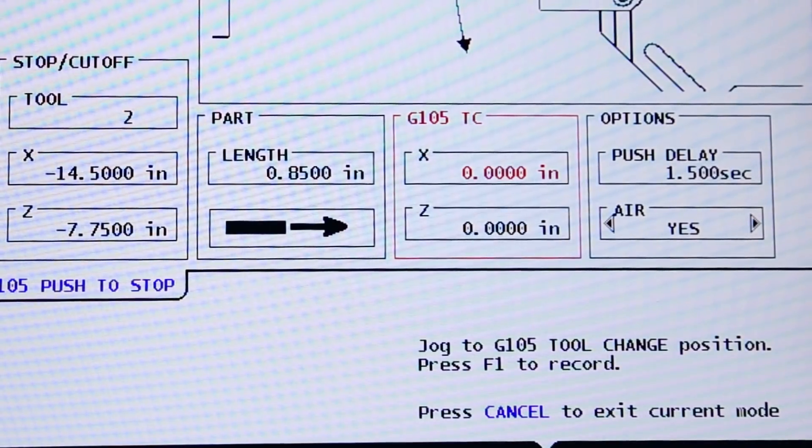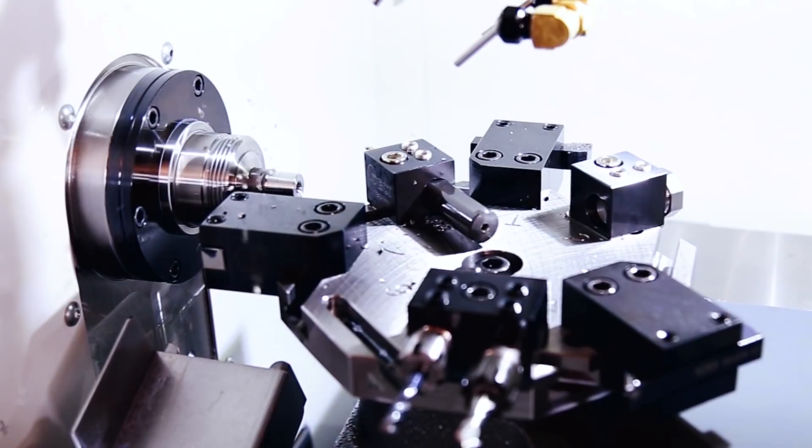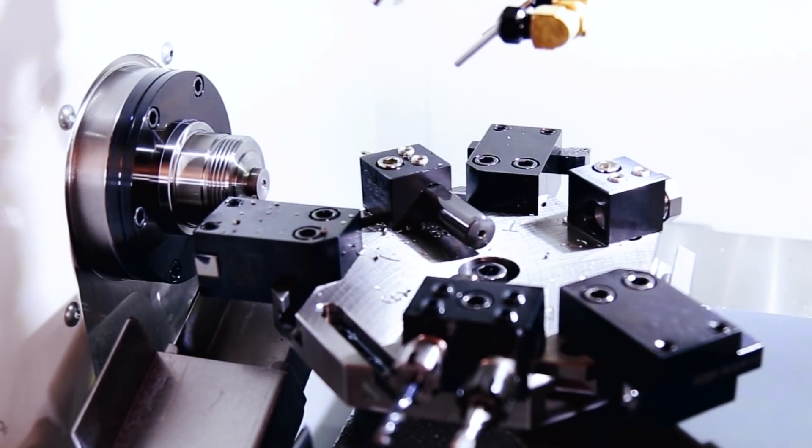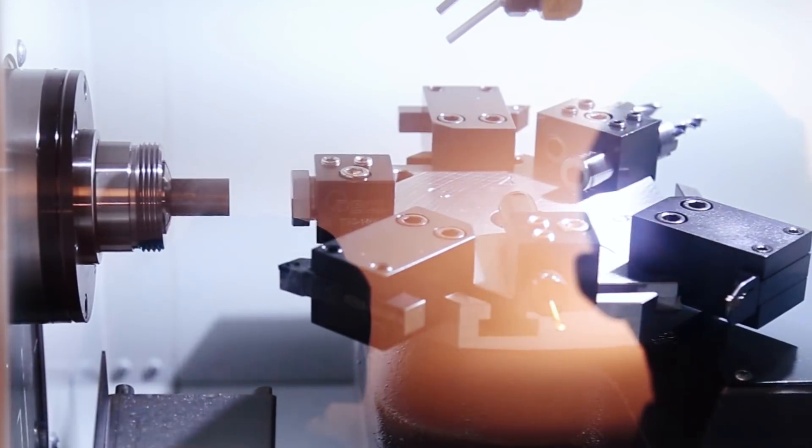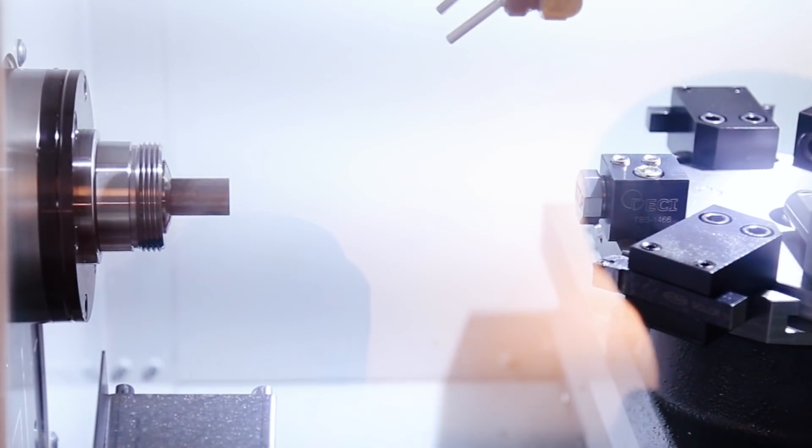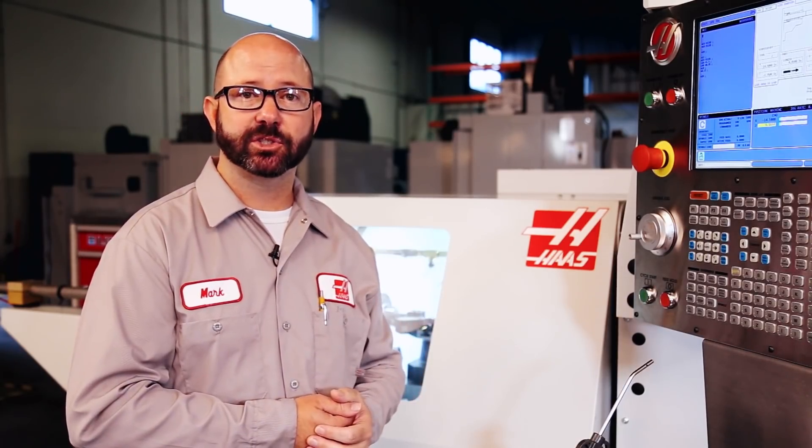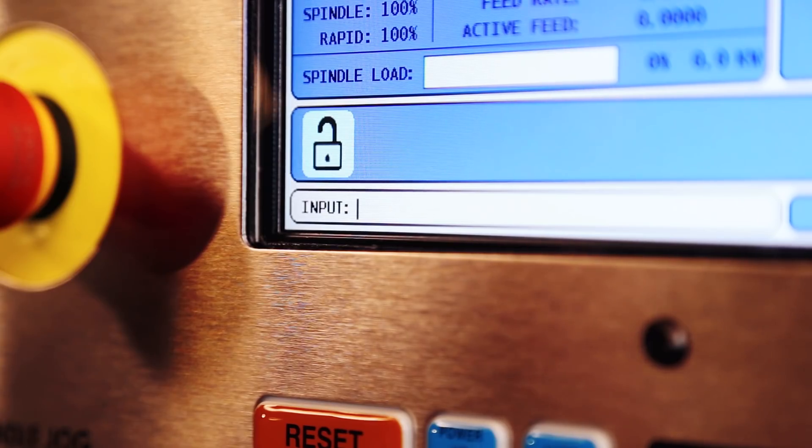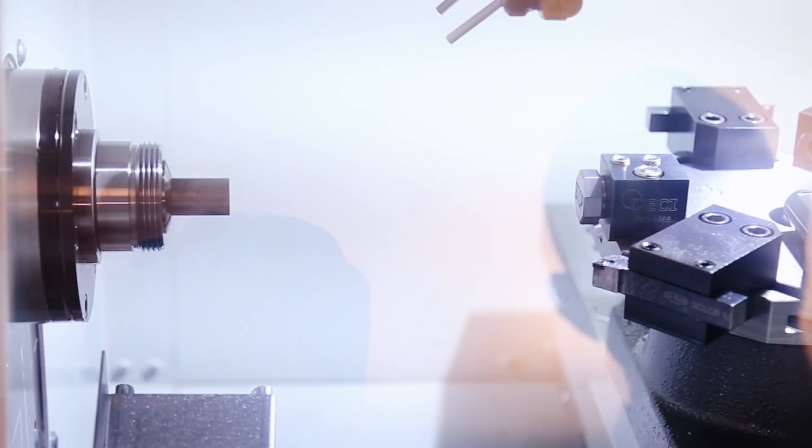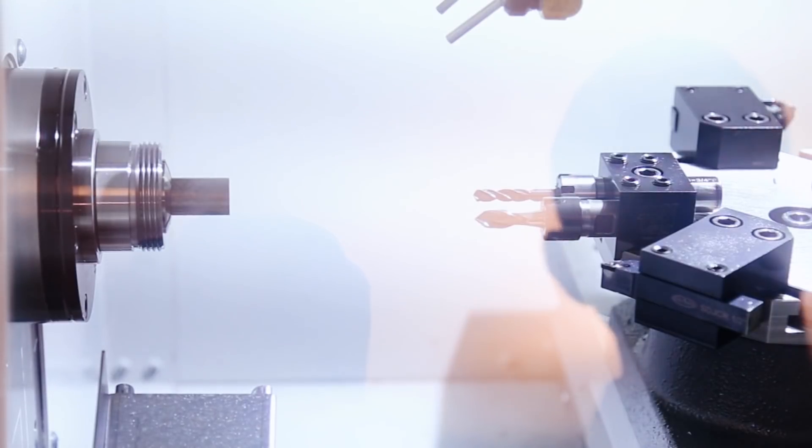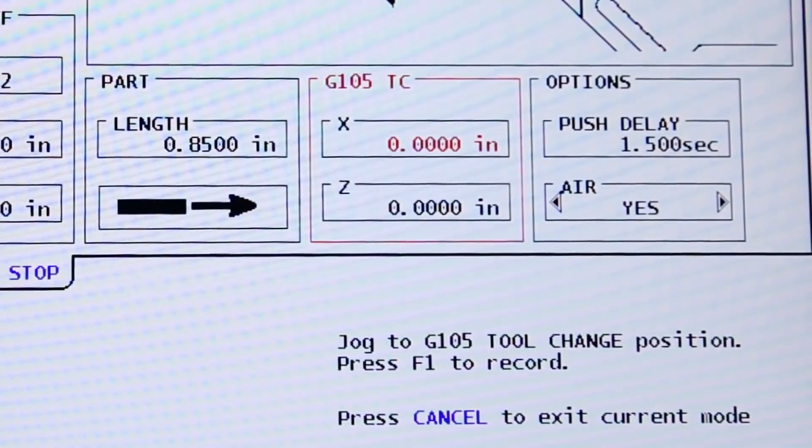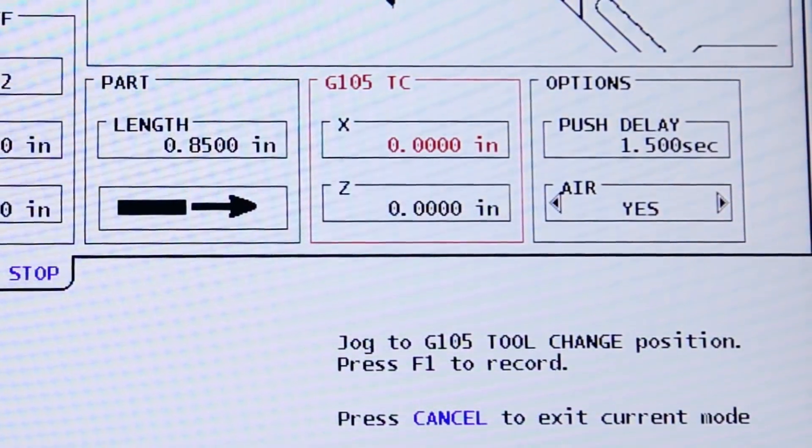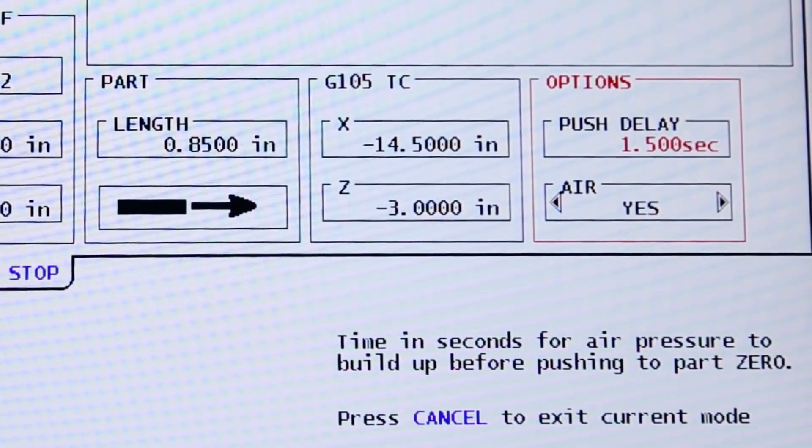On to column three. G105 TC. That's G105 tool change. When a G105 is reached in our program, the control is going to do a tool change to our stop automatically. But to do this safely, it needs to know where it can do a safe tool change. I'm now going to jog my turret out of the way. And I can do this right from the G105 bar feed page. Then I'm going to do a tool change to my longest tool, which happens to be tool five. So I enter T5, turret forward. Okay, so now we're in a great spot to do tool changes. And we can command a few tool changes and make sure everything clears. Because this is the position that the turret is going to do a tool change to our stop each time it finds a G105 in our program. With my G105 tool change column highlighted, I'm going to follow the on-screen instructions and press F1 to record this G105 safe tool change location.